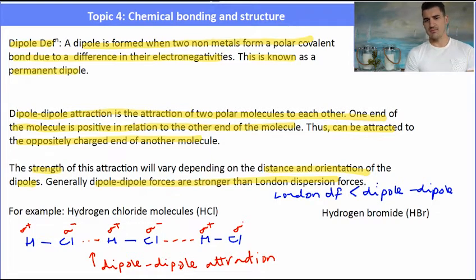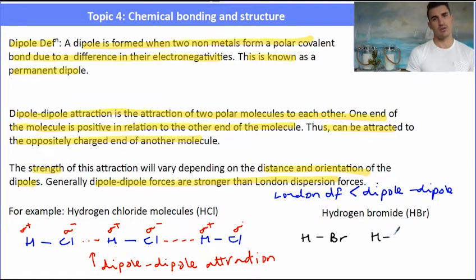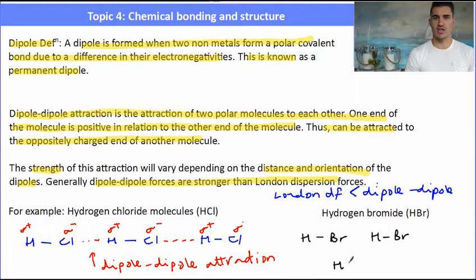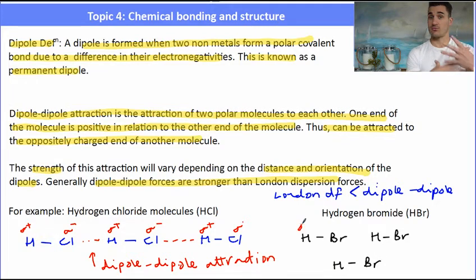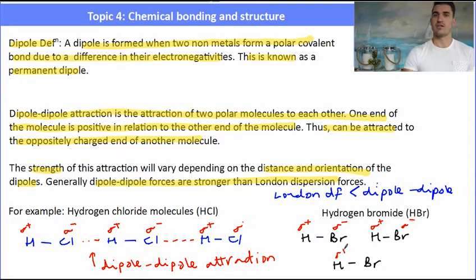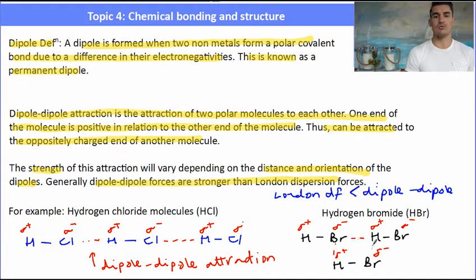Another example is hydrogen bromide, HBr. Again, the hydrogen will have that partial positive charge and the bromine the partial negative charge. There will be this three-dimensional representation of these molecules, where they're bonded to the oppositely charged dipole via a dipole-dipole interaction.